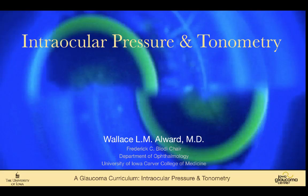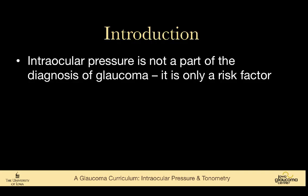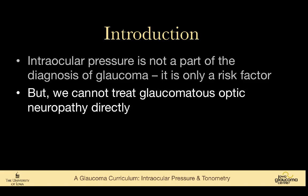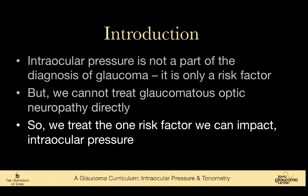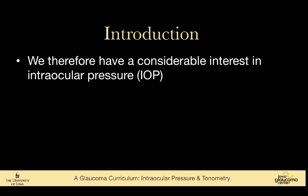Measuring intraocular pressure is a pillar of management of patients who have glaucoma. This is a talk on how to measure intraocular pressure, or tonometry. Intraocular pressure is not a part of the diagnosis of glaucoma — it's simply a risk factor for developing glaucoma. But because we cannot treat glaucoma as optic neuropathy directly, we treat the one risk factor we can impact, which is intraocular pressure, also called IOP.